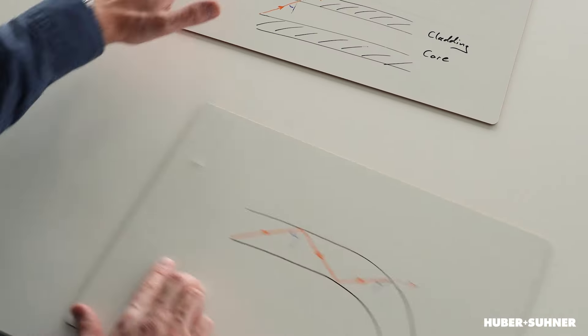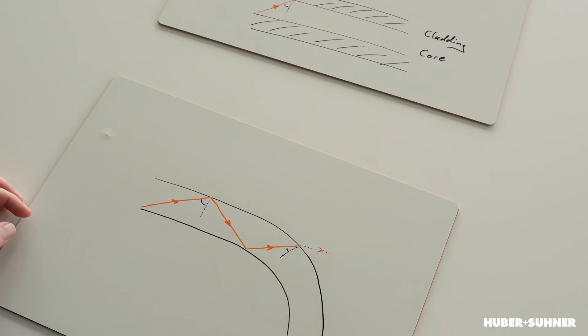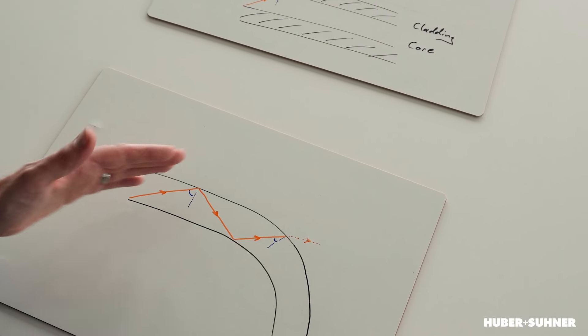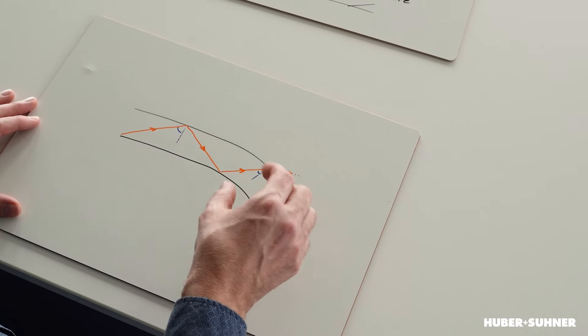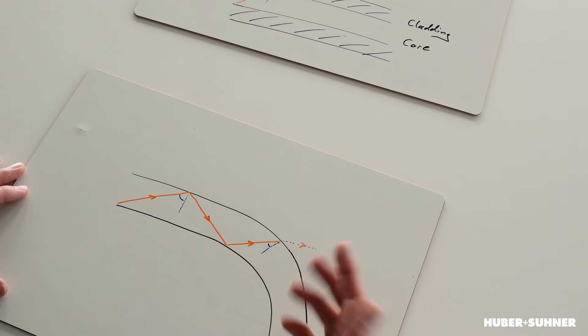Looking at this drawing representing fiber bending, at the beginning you will see that the incident angle still is big enough so that we have total reflection. But because of the fiber bend, the incident angle at this point actually becomes so small that we end up not having total reflection, meaning some of the light signal passes through the cladding. That light signal passing through the cladding is lost — the energy is lost for the continuing signal, so in other words we have loss of optical power.